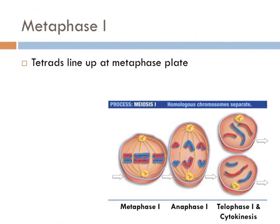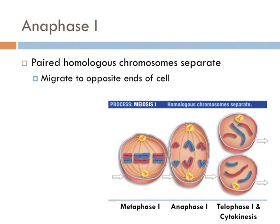The next stage is metaphase I, when the microtubules from the centrioles move the tetrads to a region in the middle of the nucleus known as the metaphase plate. It's important to realize that the alignment of the maternal and paternal homologues is random — if it wasn't, you'd be a lot more like your mom or your dad than some random combination of both. During anaphase I, the homologous chromosomes in each tetrad separate and begin to move to opposite sides of the cell by constricting the microtubules from the centrioles.